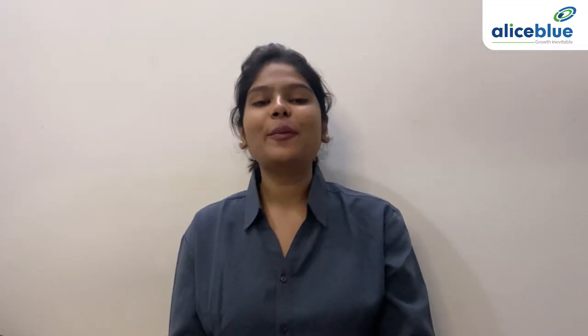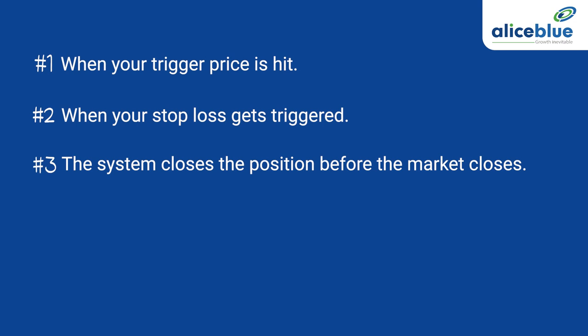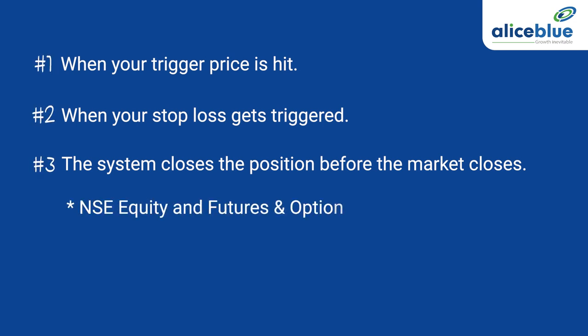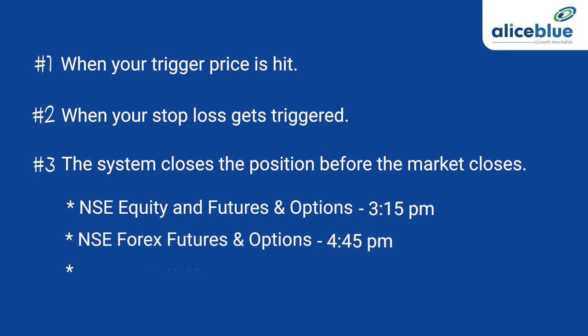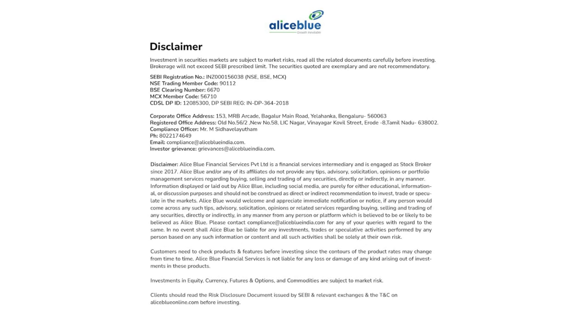Now how do you square off a bracket order? Just like a cover order, there are three ways in which a bracket order can get squared off: when a trigger price hits, when a stop loss gets triggered, or if none of these options are attained, the system closes the position before the market closes. Markets have specific timings: NSE equity and futures and options at 3:15 pm, NSE forex futures and options at 4:45 pm, and MCX at 11:30 pm. The time again differs from broker to broker. That was everything regarding bracket order. Thank you for watching. For more such informative videos, make sure that you subscribe to Alliance Blue Online. Investment in securities markets are subject to market risks. Read all the related documents carefully before investing.